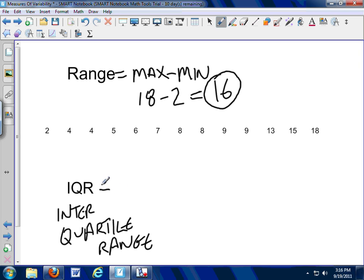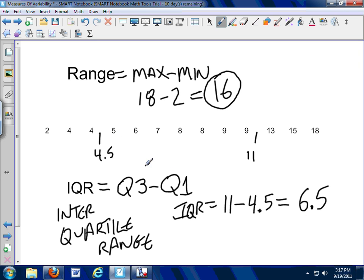The interquartile range talks about the middle 50% of the data. So, it's just the value of Q3 minus the value of Q1. So, in this case, on this particular set of data, my Q1 was right here at 4.5, and my Q3 was over here at 11. So, my interquartile range is 11 minus 4.5. That's what my IQR is. And so, that's going to be 11 minus 4, 7 minus a half more, 6.5.